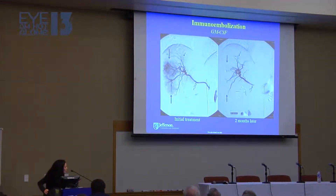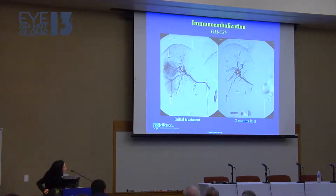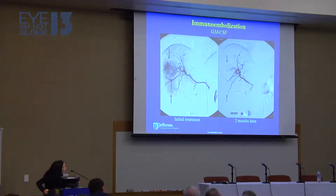This is just an example of an arteriogram — a catheter placed in the hepatic artery. These large dark areas are the tumors, the melanoma metastases. This is prior to immunoembolization, this is after, and this is two months after. You can see that the hypervascular tumors are pretty much gone.